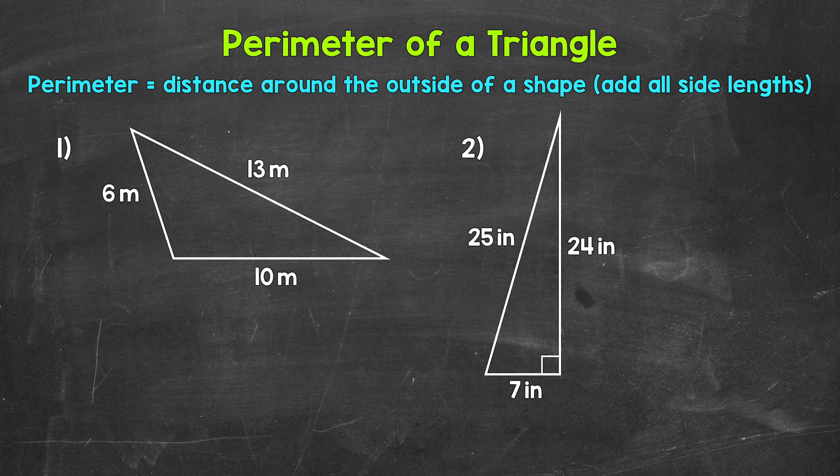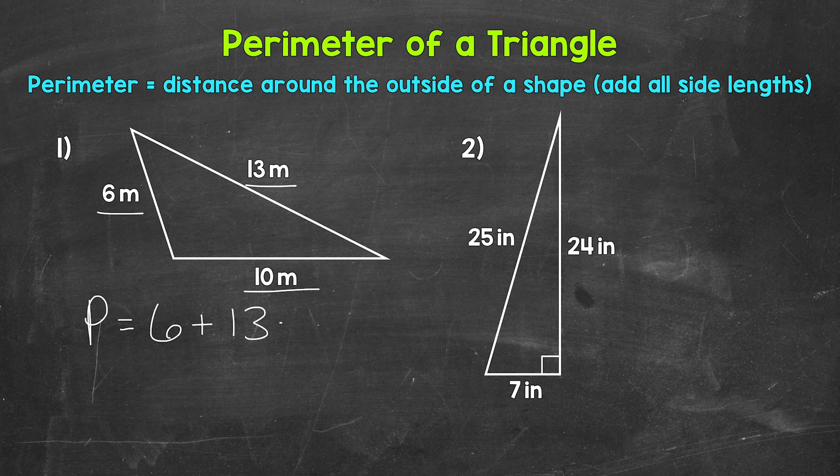Starting with number one. Let's find the perimeter, and we can do this by adding the lengths of all of the sides. And since we're working with triangles, we will have three sides that we need to add. So perimeter equals, and as far as our sides, we have 6 meters, 13 meters, and 10 meters. So 6 plus 13 plus 10.